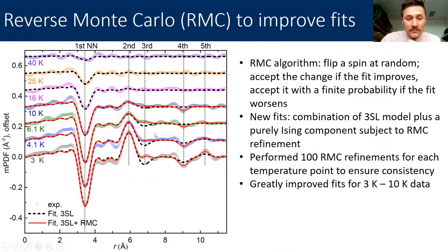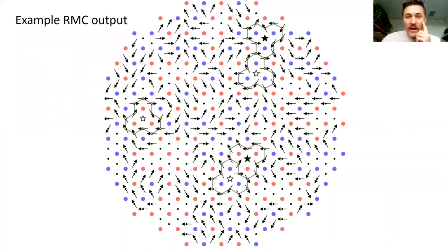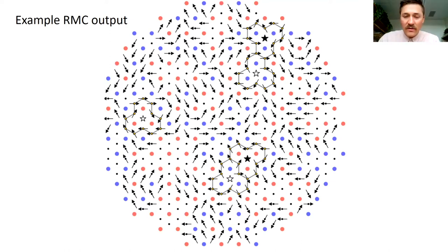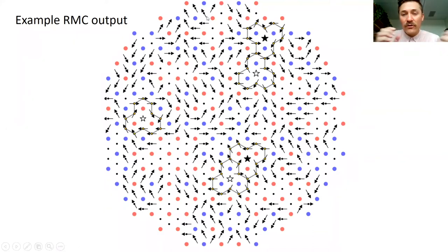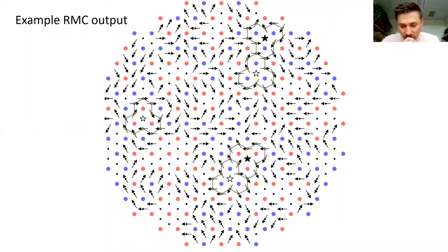We ran the RMC algorithm together with the three-sublattice order model, doing a hundred RMC refinements at each temperature point from 3 K up to 10 K. The result — the solid red curve — captures the features at the third, fourth, and fifth nearest neighbors that the three-sublattice model could not. Inspecting the RMC configurations, we noticed that vortices were naturally appearing. The red and blue spins represent the physical Ising moments on the triangular lattice, and from these we calculated the pseudo-spins (black arrows). Searching for vortices and antivortices, we found they appeared naturally in the RMC output — bound pairs and even isolated vortices.